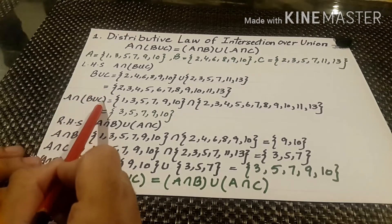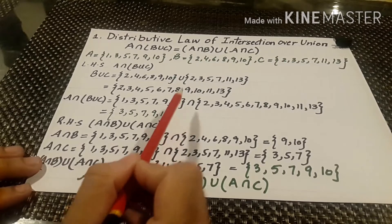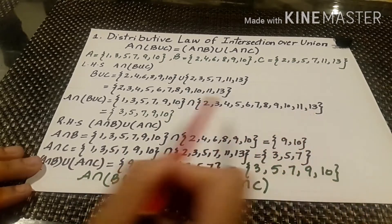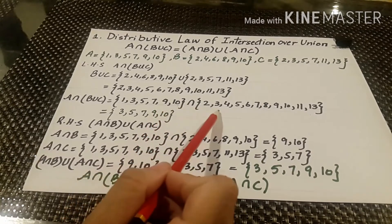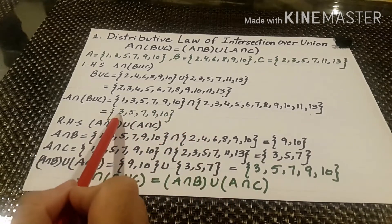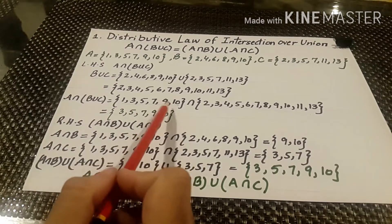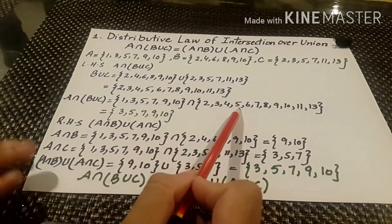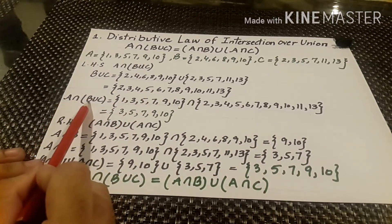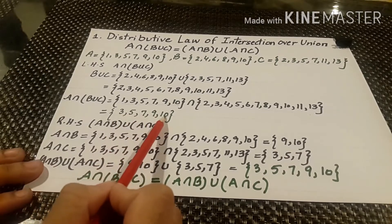Now we take A intersection (B union C). We write set A intersection set B union C and we find the common values: 3, 5, 7, 9 and 10. These are the common values in both the sets. So we get A intersection (B union C) as {3, 5, 7, 9, 10}.